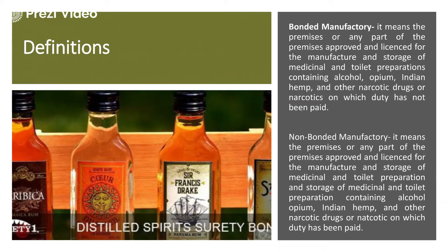Before proceeding with further acts, rules, and regulations, we should be thoroughly familiar with the definitions. The most important definition is bonded manufacturing. There are two types of manufacturing where alcohol is stored: bonded manufacturing and non-bonded manufacturing. Bonded manufacturing refers to premises under direct control of the government, while non-bonded manufacturing refers to private organizations that need government approval. In bonded manufacturing, it means the premises approved and licensed for medicinal and toilet preparations, including narcotic drugs or narcotics on which duty has not been paid.